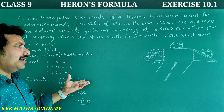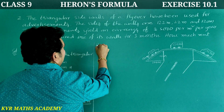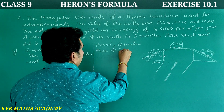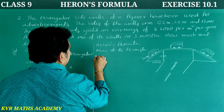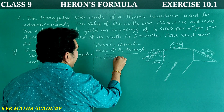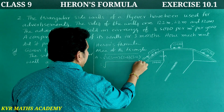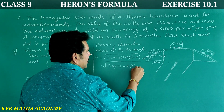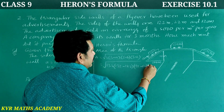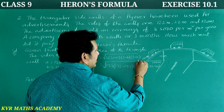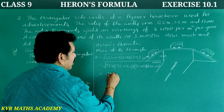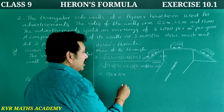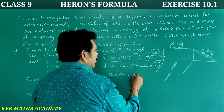According to Heron's formula, area of the triangle equals root of S into (S minus A) into (S minus B) into (S minus C), which is root of 132 into (132 minus 122) into (132 minus 120) into (132 minus 22). This equals root of 132 into 10 into 12 into 110.